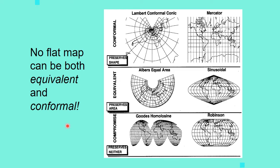You could never have a map of the world that's both equivalent and conformal, because you can't preserve equal area and true shape at the same time, although there have been many attempts to do so.